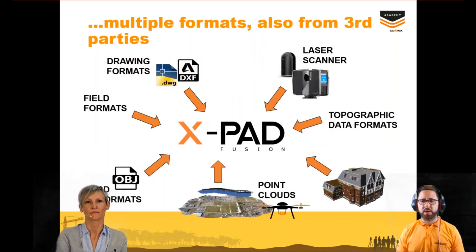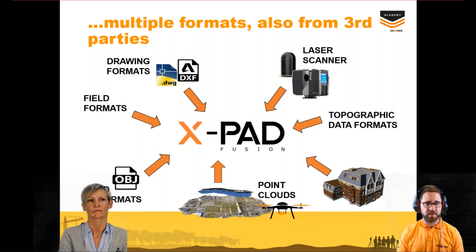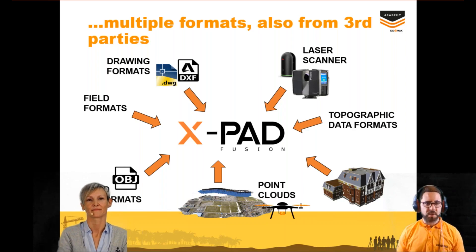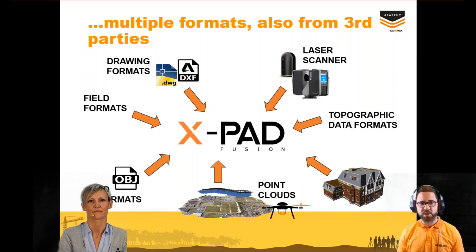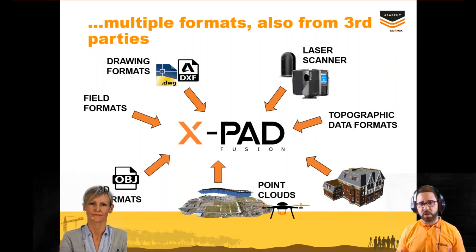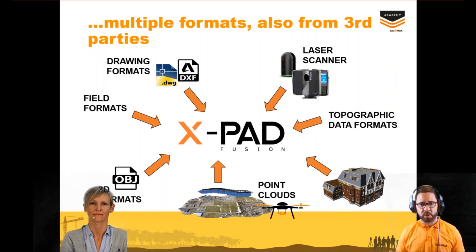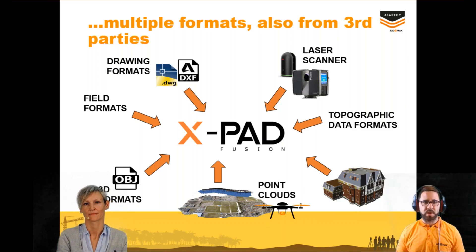There are also other options. For example, we can import multi-format data like field format and topographic data format — so 2D and 3D data — using the classical drawing format, but we can also import 3D formats like OBJ files for surfaces and mesh. Then also point cloud data generated from other laser scanning, but also from photogrammetry — RESTEL and AERA photogrammetry. And of course, we can integrate all this data with the IFC file, the classical BIM model.